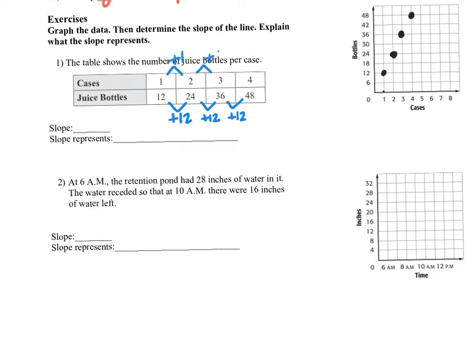The change from 1 to 2 is adding 1, adding 1, adding 1. So our change in Y over our change in X is 12 over 1. So the slope there is 12.